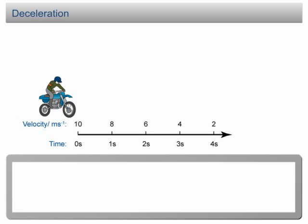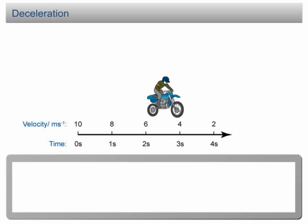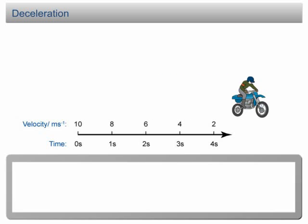Deceleration. Let's look at this example. A motorcycle moving along a straight line, its velocity decreases from 10 meter per second to 2 meter per second in 4 seconds. Therefore, the acceleration is negative 2 meter per second per second.